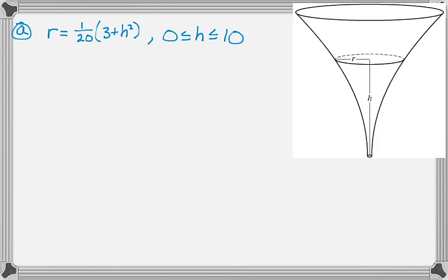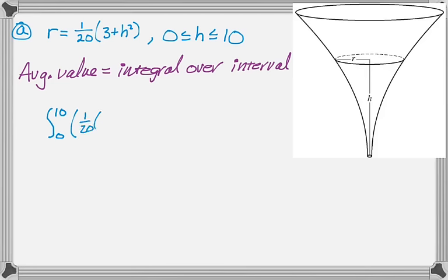So the first question isn't that bad. It says find the average value of the radius. So average value is integral divided by interval. So if we know that, we can kind of just do this. This is a non-calculator problem, though, and it's kind of a really annoying non-calculator problem. So it's the integral from 0 to 10 of 1 over 20, 3 plus h squared, dh, over 10 minus 0.